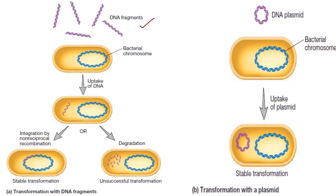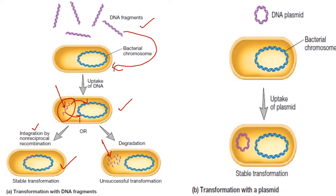Here you can see the DNA fragments. They are spontaneously picked up by this bacterial cell, and here you can see this picked-up fragment. There are two possibilities. If by non-reciprocal recombination the fragment is getting inserted into the main genome, it is known as stable transformation. If the fragment is not inserted into the main genome, it will remain as single-stranded DNA, and the enzymes of the bacterial cell can degrade these fragments — this is known as unstable transformation. For stable transformation to occur, these genes should incorporate into the main genome.